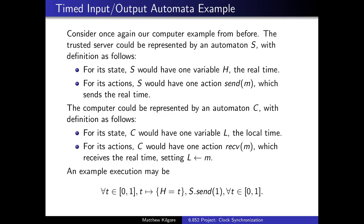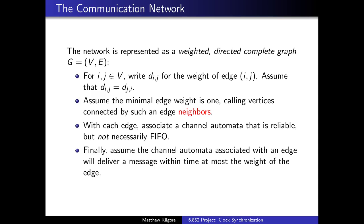For our computer example from before, we can model the server S, which is a very simple automata with just one variable h in real time and one action send. A client can be represented by a similar automata with one local variable h in real time and one action receive. Then we have the sample execution in which h just always went up to t, and at time 1 send occurs.